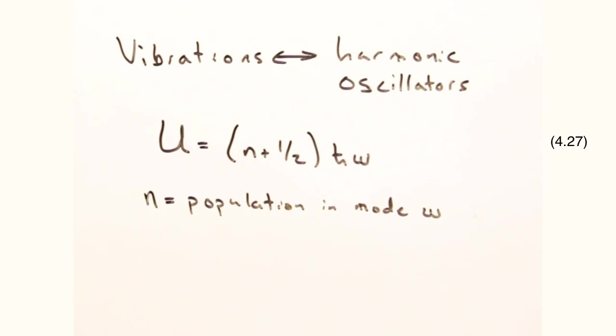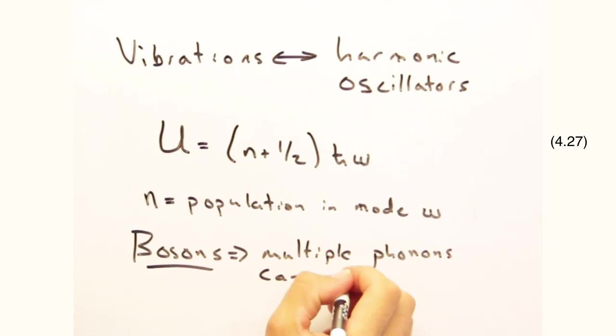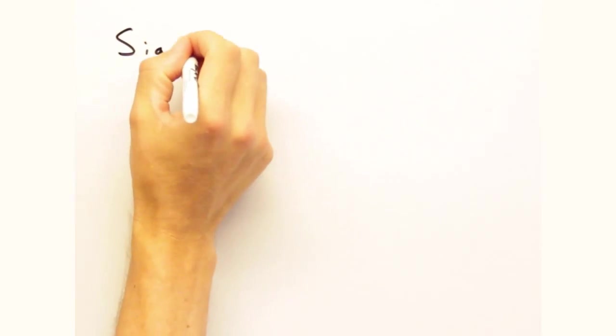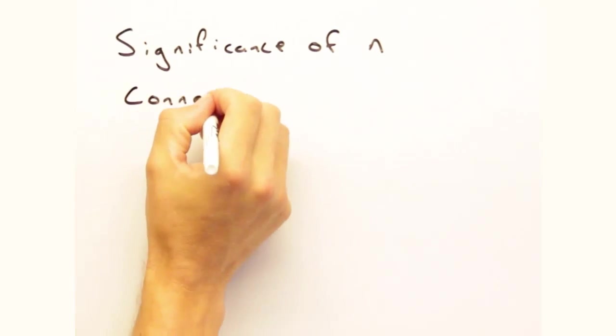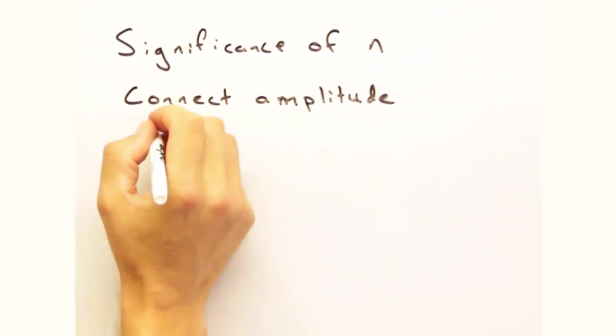On the other hand, phonons also behave like photons. Both are bosons, so multiple states of the same energy can exist in a given system. Also like photons, the amplitude of vibrations in the lattice is related to n, the number of phonons with a particular wave vector q.